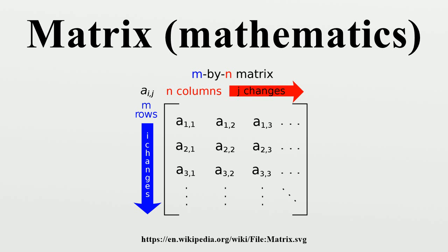Using these operations, any matrix can be transformed to a lower triangular matrix, and for such matrices the determinant equals the product of the entries on the main diagonal. This provides a method to calculate the determinant of any matrix. Finally, the Laplace expansion expresses the determinant in terms of minors, i.e., determinants of smaller matrices. This expansion can be used for a recursive definition of determinants, equivalent to the Leibniz formula. Determinants can be used to solve linear systems using Cramer's rule, where the division of the determinants of two related square matrices equates to the value of each of the system's variables.